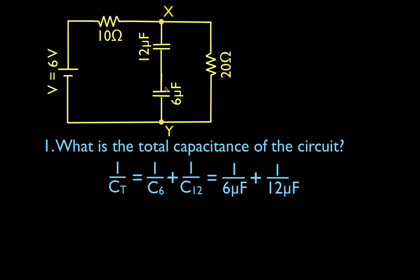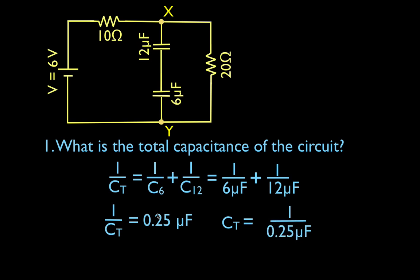When they're in series, we have to use the 1 over equation. So we have 1 over 6 plus 1 over 12, and 1 over the total capacitance equals 0.25. It is important to remember that this is not the total capacitance — this is 1 over the total capacitance. To get the total capacitance, I take the reciprocal: the total capacitance equals 1 over 0.25, which gives us 4 microfarads. That is the equivalent capacitance of the two series capacitors.